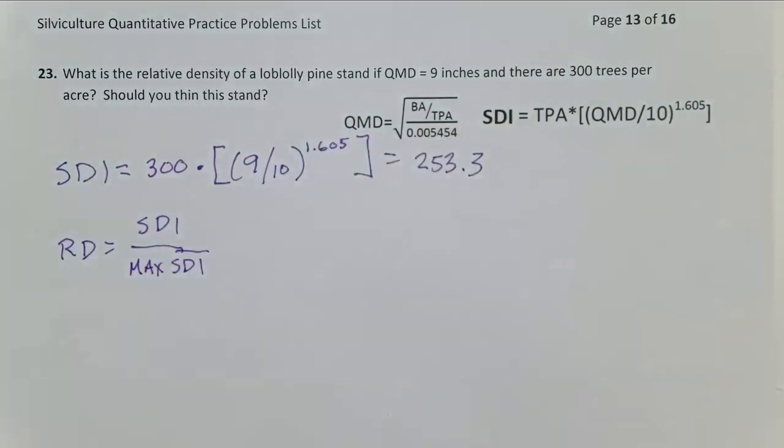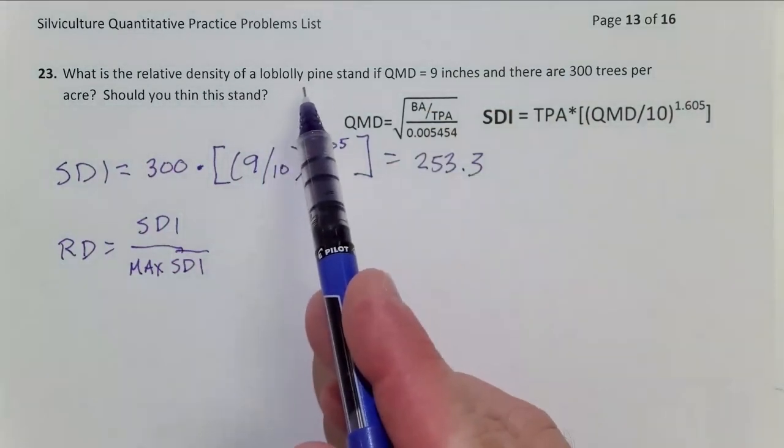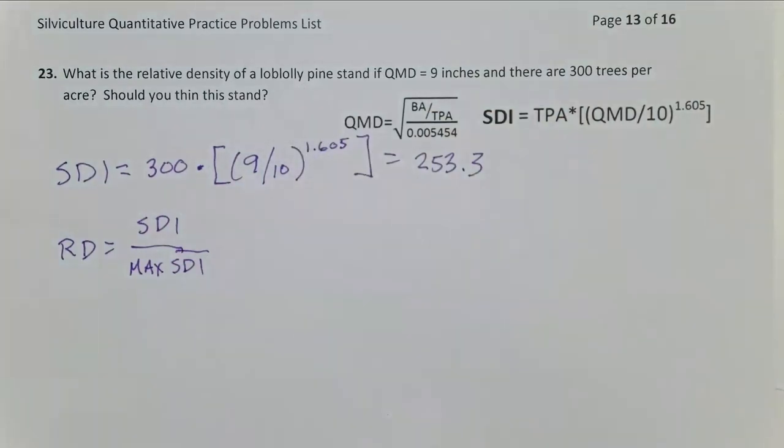And remember, you have to memorize really three SDIs this semester in this class. We need to know that for Loblolly Pine, max SDI is 450 10-inch trees per acre. For our other three southern yellow pines, that's slash, shortleaf, and longleaf pines, it's 400 10-inch trees per acre. And we're going to use 230 for hardwoods.